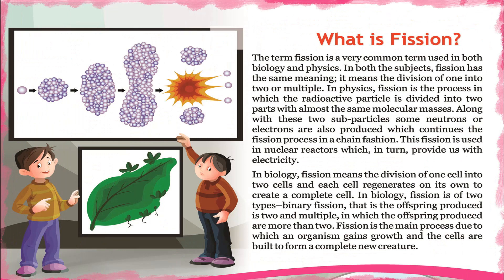What is fission? The term fission is commonly used in both biology and physics, and in both subjects it has the same meaning: the division of one into two or multiple parts. In physics, fission is the process in which a radioactive particle is divided into two parts with almost equal molecular masses. Along with these two sub-particles, some neutrons or electrons are also produced, which continue the fission process in a chain fashion.